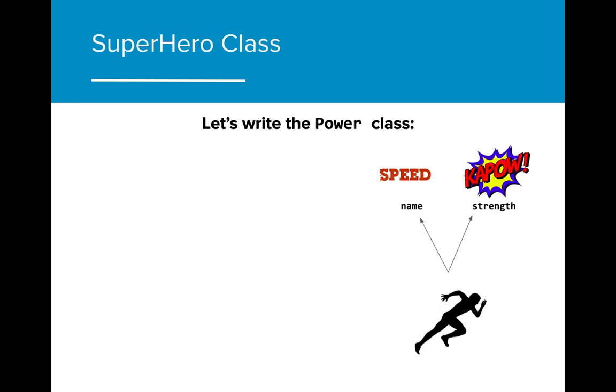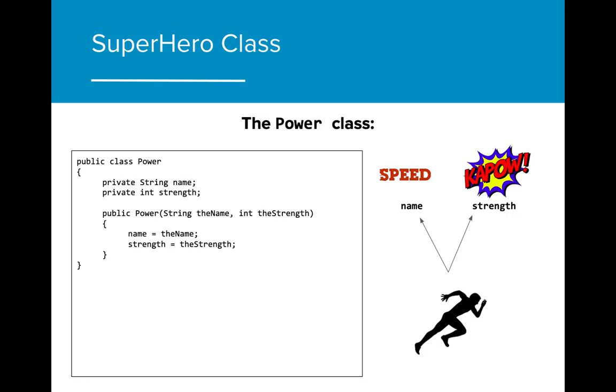Let's start by writing the power class. Can you figure out the implementation for this class yourself? Pause the video before moving on. Here is one implementation of the power class. We have two instance variables, name and strength, and our constructor has the parameters the name and the strength to allow users to input information about the specific power they would like to build.